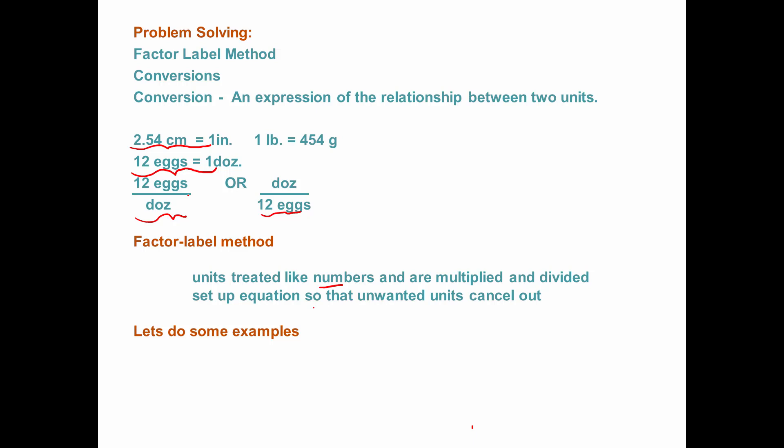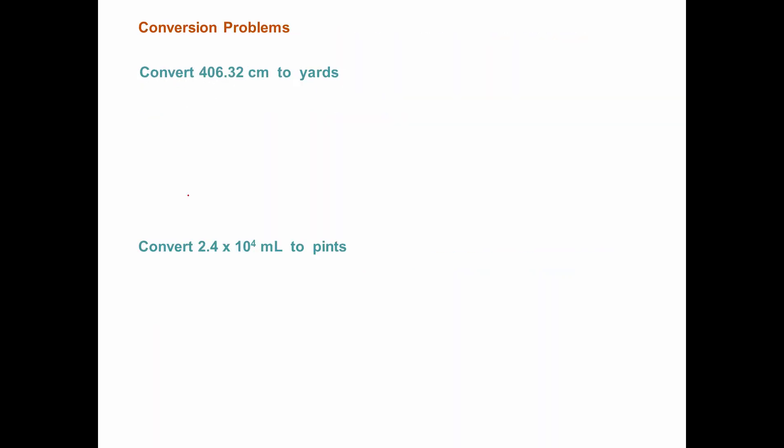In the previous video I showed you how to set up conversion factors from equivalences. Briefly, we know that 12 eggs is equal to a dozen and what I can do is write two conversion factors for each equivalence. When I use the factor label method, that means that I can treat the units like numbers. So we can divide and multiply the units so that unwanted units will cancel out to give us our desired unit. Let's do a few examples here.